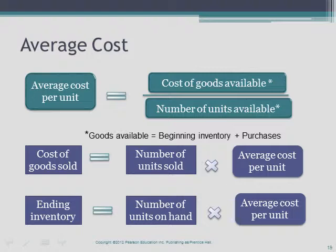Under the average cost method, sometimes called the weighted average method, cost of goods sold is based on the average cost of inventory during the period. The average cost per unit is calculated by dividing the cost of goods available by the number of units available — cost and units available being found by summing beginning inventory plus purchases. This average cost per unit is then multiplied by the number of units sold to determine cost of goods sold, and by the number of units on hand to determine ending inventory.